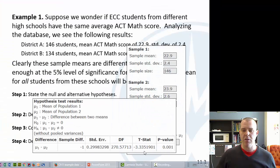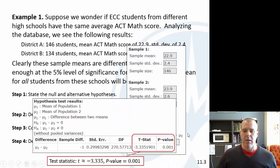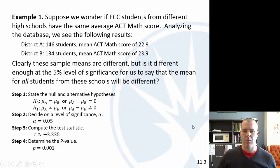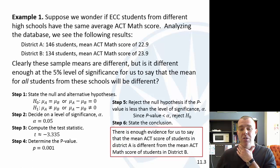So we had a pretty small p-value. When we do our hypothesis test, we would reject the null hypothesis in our conclusion that there is enough evidence to say that the mean ACT score for the students in the two districts is different.